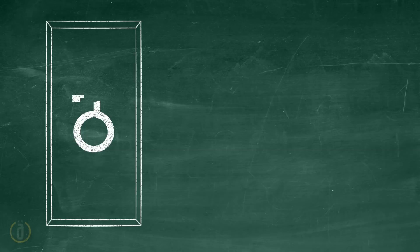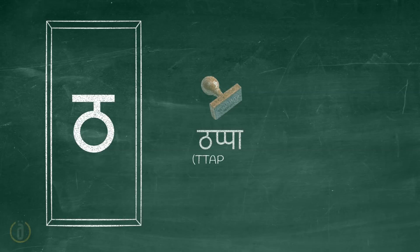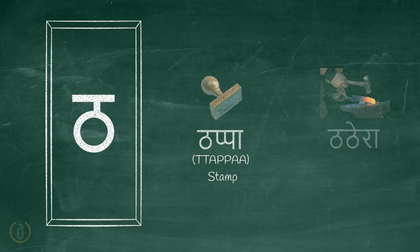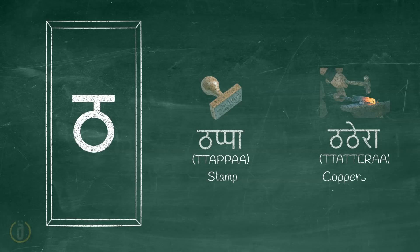Now let us learn some words starting with the letter Tha. Thappa — stamp. Thathera — coppersmith.